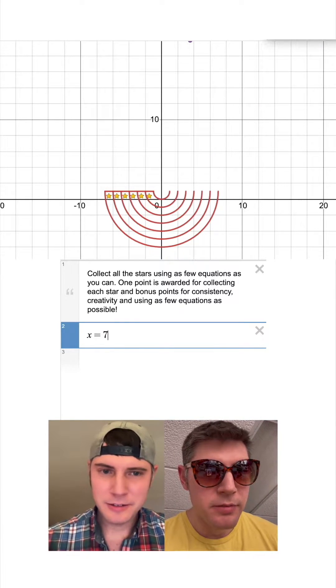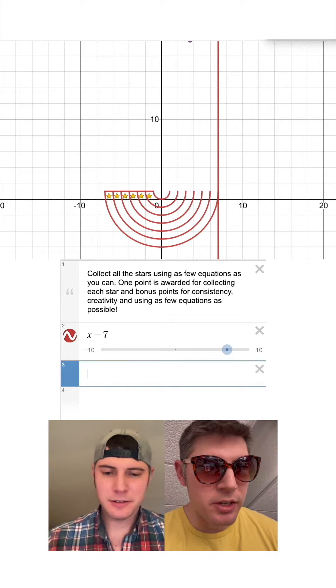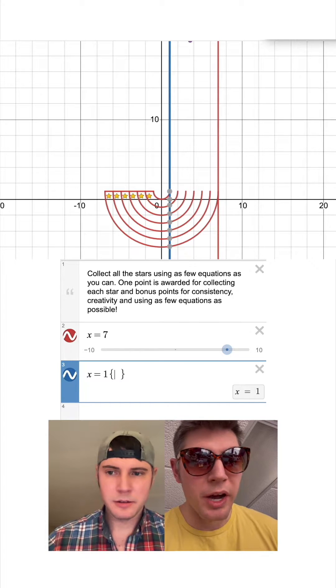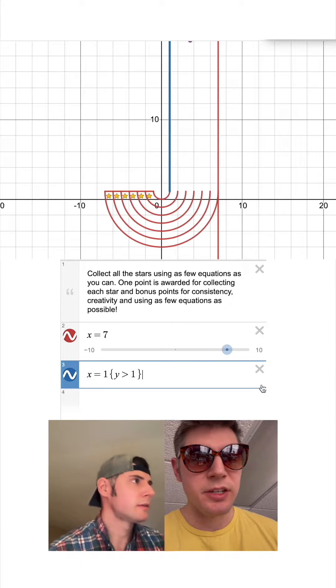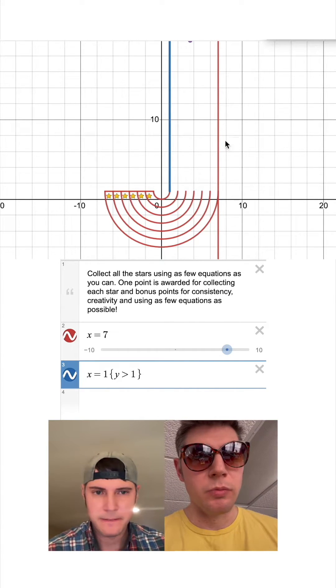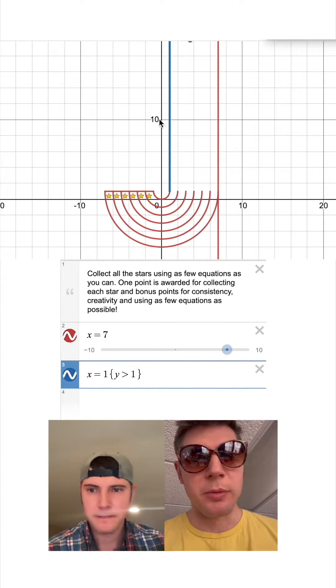X equals 7. Okay. And then X equals 1, and the restriction is Y is greater than 1. What I'm thinking is X equals 7 forms the border on the right side, and X equals 1 forms the little wall on the left side, so that just keeps all the marbles inside there.